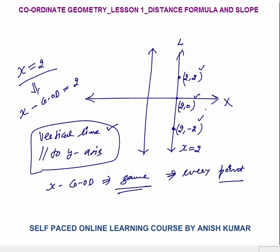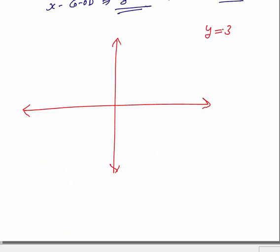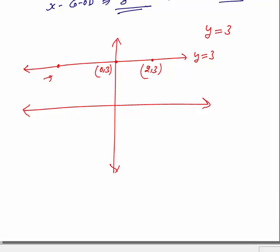Same is true with a horizontal line. The line y = 3 has infinite length. It cuts the y-axis at (0, 3). Points on this line could be (2, 3), (-2, 3), and so on. On any horizontal line or any line parallel to the x-axis, the y-coordinate is always the same.